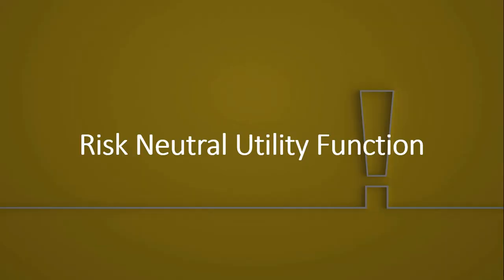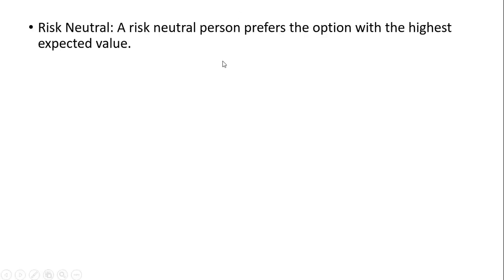In this video we're going to look at a risk-neutral utility function and do an example problem. A risk-neutral person prefers the option with the highest expected value.